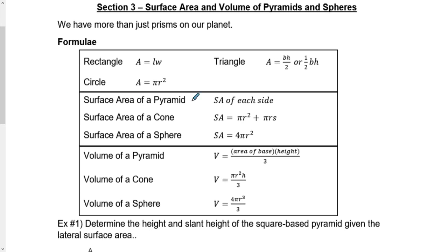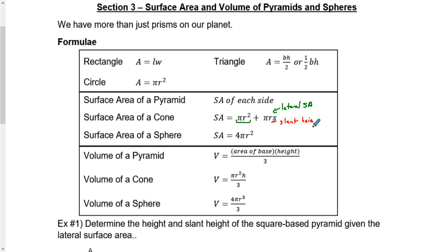The surface area of a pyramid is just taking the surface area of each side — whatever sides they are, whether they're squares, triangles, or rectangles. The surface area of a cone: a cone is essentially a circular-based pyramid. We have the area of a circle plus the entire outside, which is the lateral surface area of a cone. The S part stands for the slant height. The surface area of a sphere is 4 × π × r².